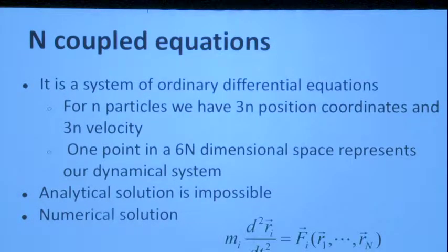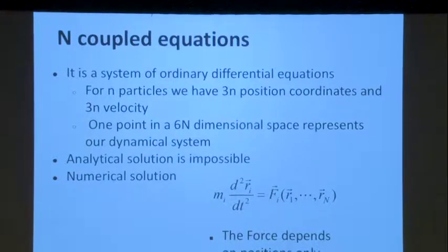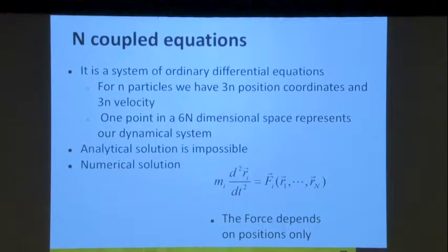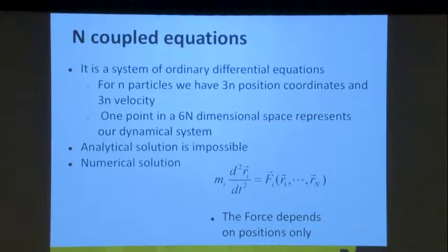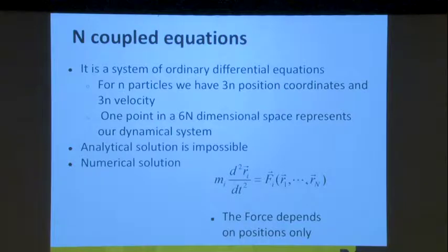If you look at Newton's equation, you can write it as m × (d²r/dt²) = F, where the mass times the second derivative of position over time squared equals the forces as a function of the distance of all the molecules. This is very important: it tells you that the force depends only on the position of the system. So if you're looking for a force that describes the interaction, the distance between atoms is what you care about.